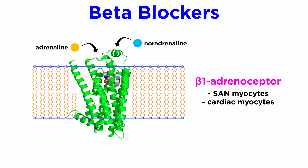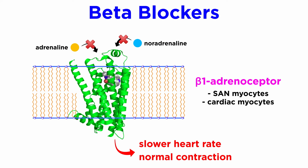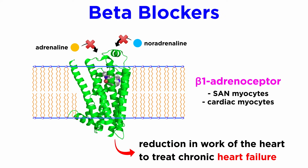In the context of acting as antiarrhythmic agents, antagonists at the beta-1 receptor aim to slow down the heart rate by removing the basal innervation by endogenous adrenaline and noradrenaline, in an effort to reestablish normal coordinated rhythmic contractions of the heart. They also have profound medical benefit in reducing the effects of adrenaline and noradrenaline to reduce the overall work of the heart in treating chronic heart failure.